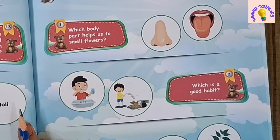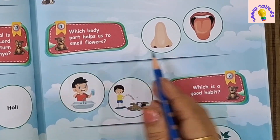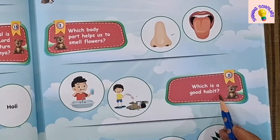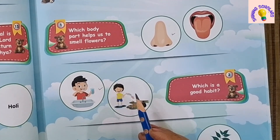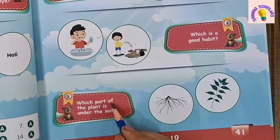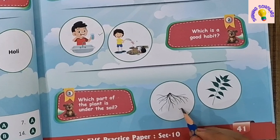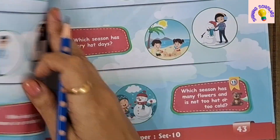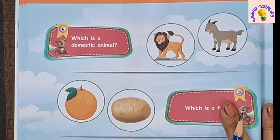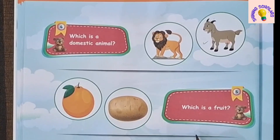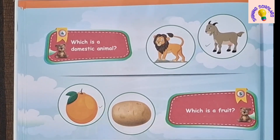Next set. First question: Which body part helps us to smell flowers? Nose. Which is a good habit? Brushing teeth on time is a good habit. Which part of the plant is under the soil? Roots are under the soil. Which is a domestic animal? Goat is a domestic animal. Which is a fruit? Orange is a fruit.